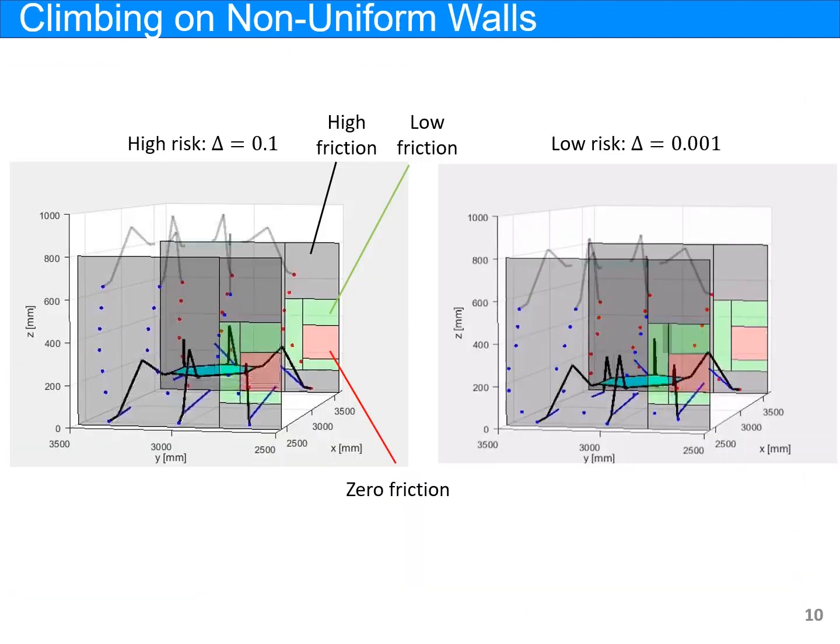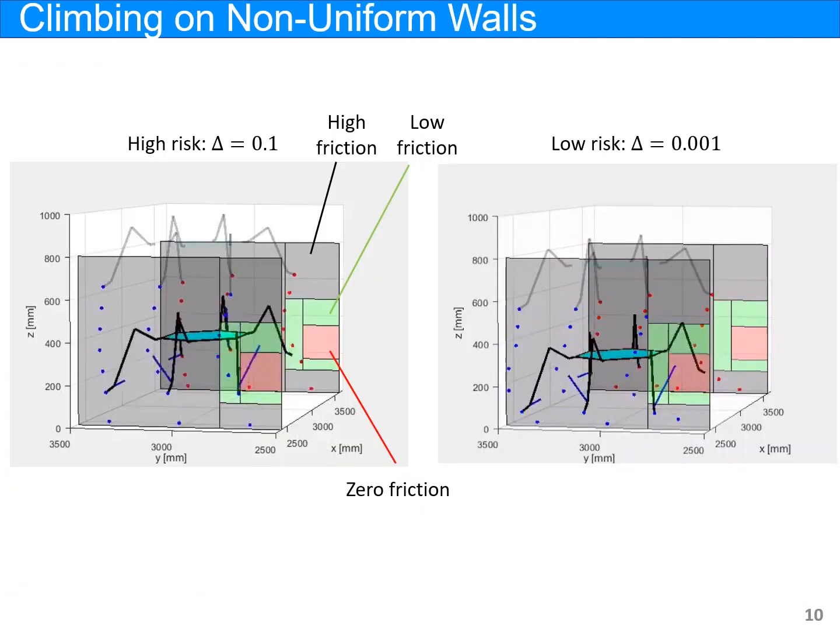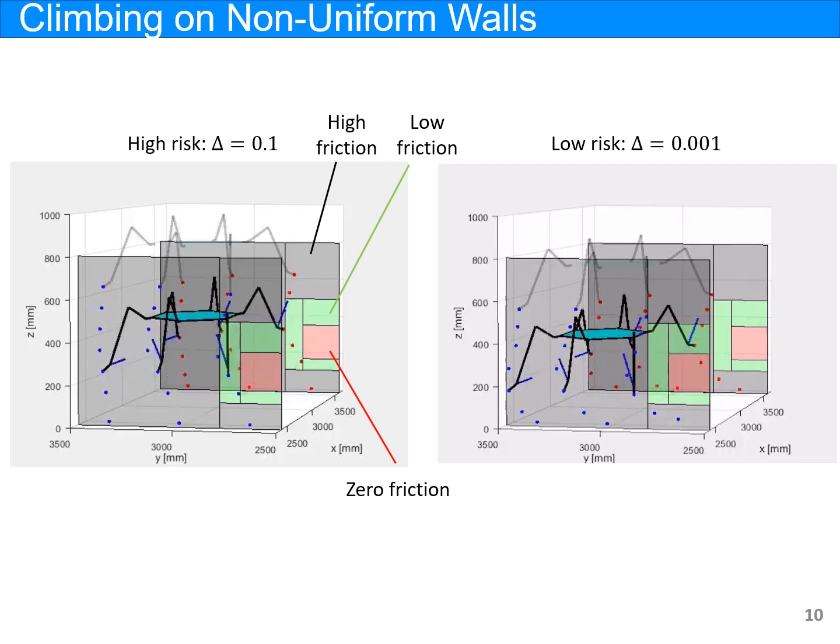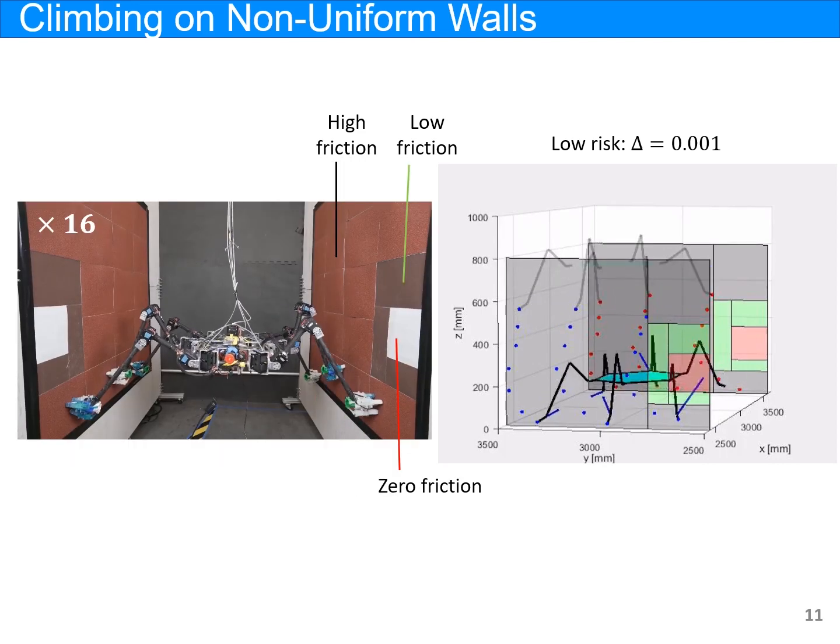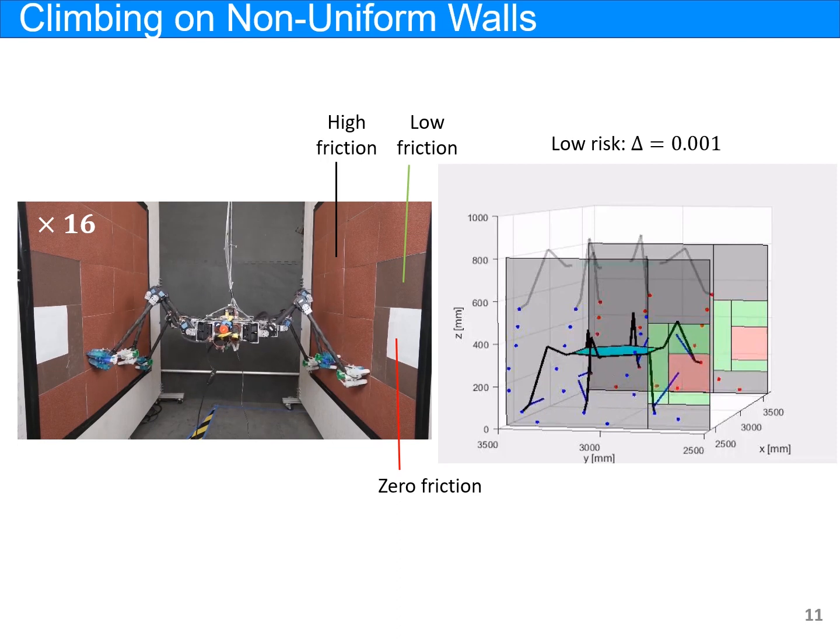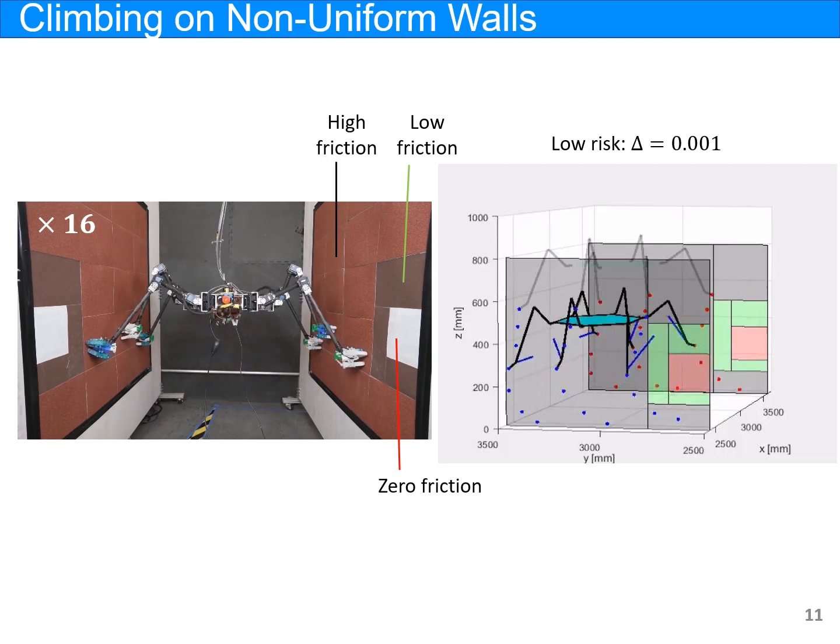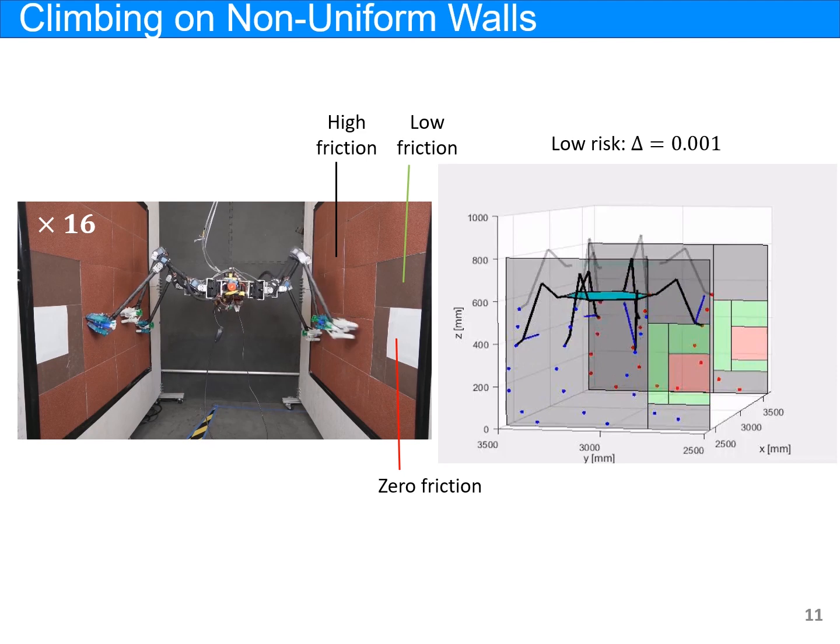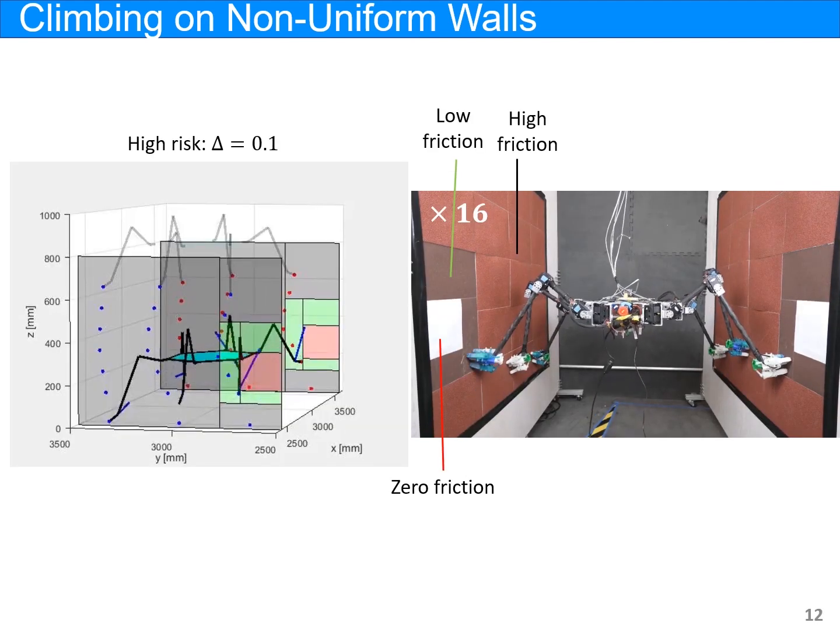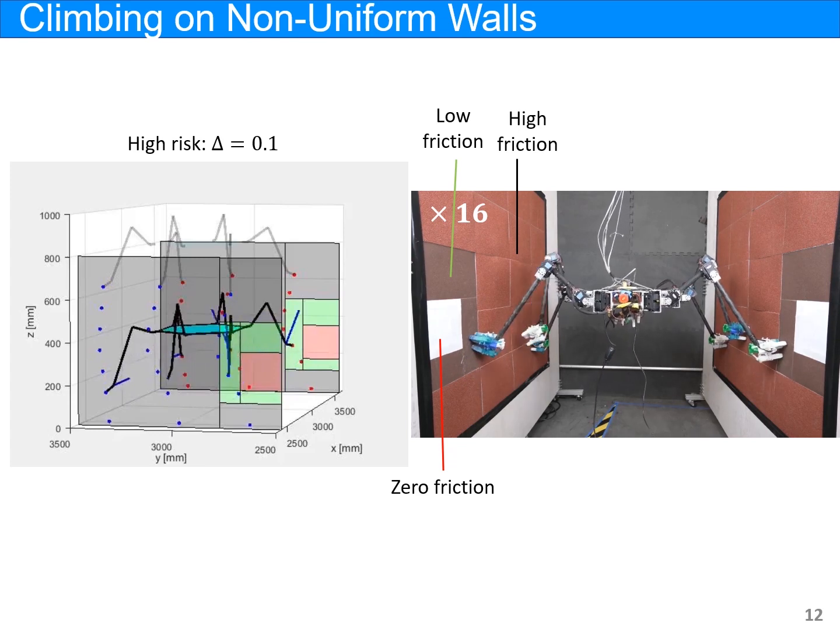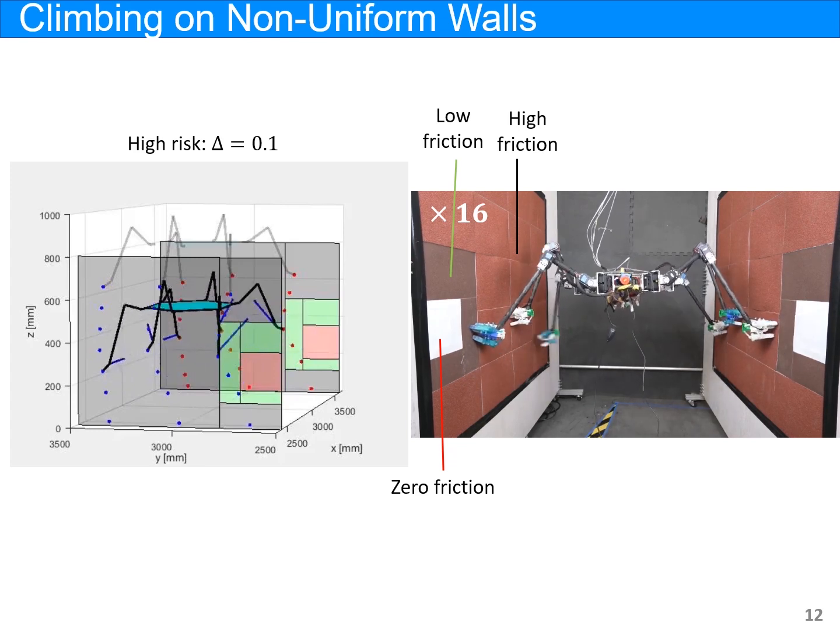The next experiment demonstrates that the planner designed different trajectories at different risk levels. This video shows that the robot takes a detour to avoid both zero and low friction terrain with low risk. With high risk, the robot only avoids zero friction terrain to achieve a shorter trajectory.